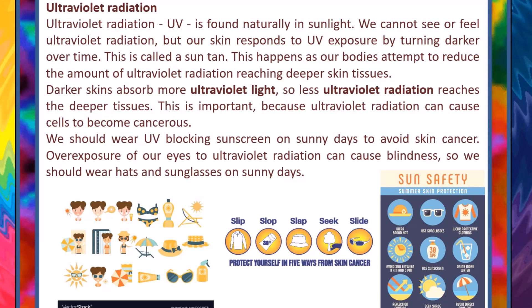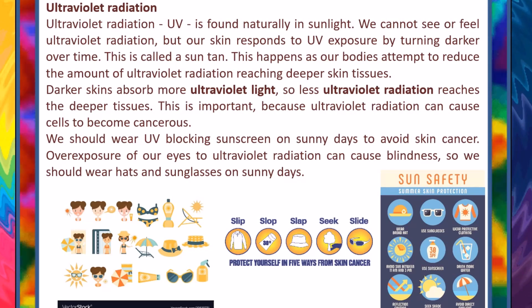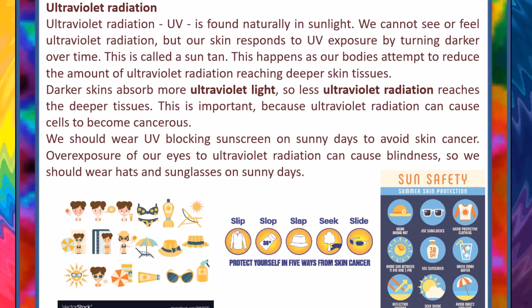Ultraviolet radiation, UV, is found naturally in sunlight. We cannot see or feel ultraviolet radiation, but our skin responds to UV exposure by turning darker over time. This is called a suntan. This happens as our bodies attempt to reduce the amount of ultraviolet radiation reaching deeper skin tissues. Darker skins absorb more ultraviolet light, so less ultraviolet radiation reaches the deeper tissues. This is important because ultraviolet radiation can cause cells to become cancerous. We should wear UV blocking sunscreen on sunny days to avoid skin cancer. Overexposure of our eyes to ultraviolet radiation can cause blindness, so we should wear hats and sunglasses on sunny days.